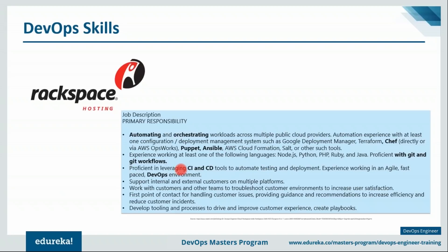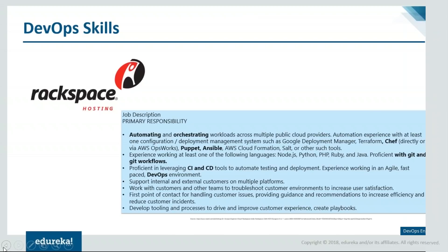A DevOps engineer at Rackspace should be proficient in leveraging CI and CD tools such as Jenkins to automate testing and deployment. They are expected to work with customers and other teams to troubleshoot environments and increase user satisfaction, and to develop tooling and processes to drive and improve customer experience, including creating playbooks.